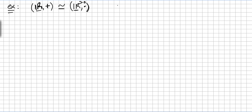Why is that? First, we have to define a phi. I say phi of X will be 2 to the power of X. This phi is the function that defines the isomorphism. Phi is clearly a function from the real numbers to the positive real numbers — there's no doubt about it. So then you have to prove that it is one-to-one.